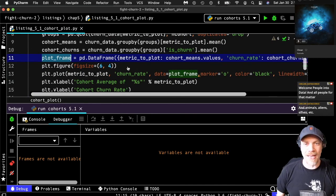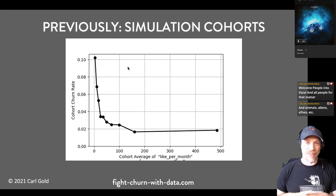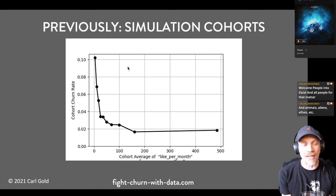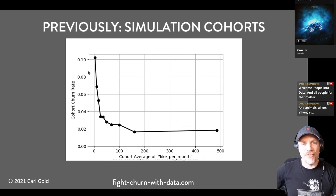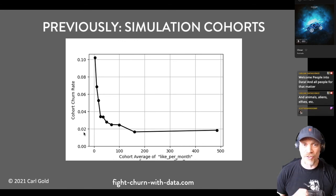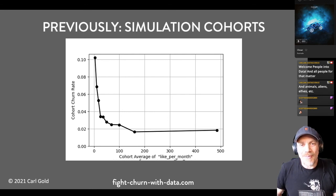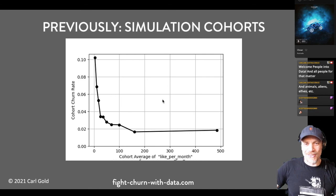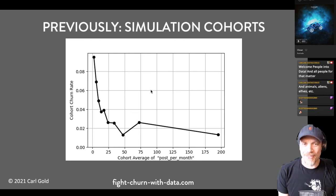This is the results of doing these cohorts on the simulation data. This is not real data — the last examples were real data from real case studies. The simulation really looks a lot like the real data, in that the most likes per month has the lowest churn rate and the fewest has the highest churn rate. You can actually see what the churn rates are because this is not private or sensitive data. The average churn rate, remember, was 4% from the descriptive statistics.